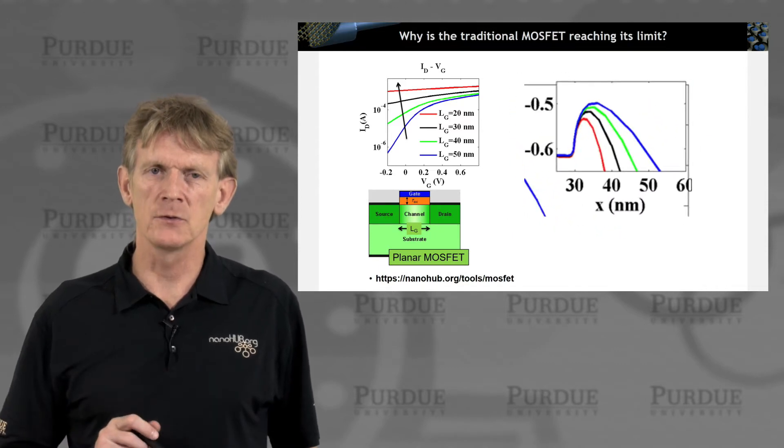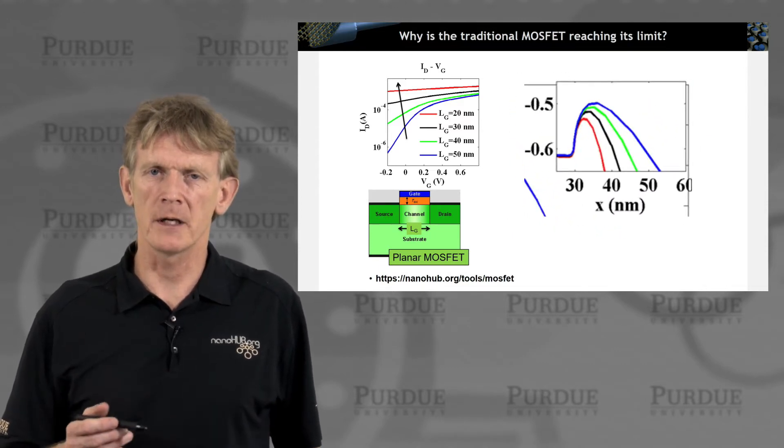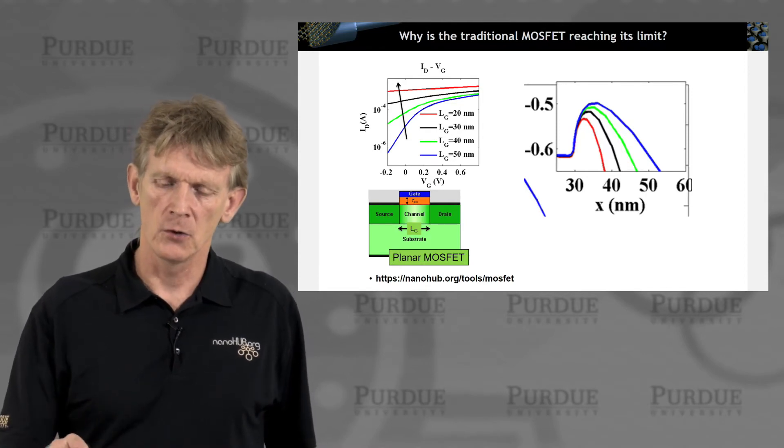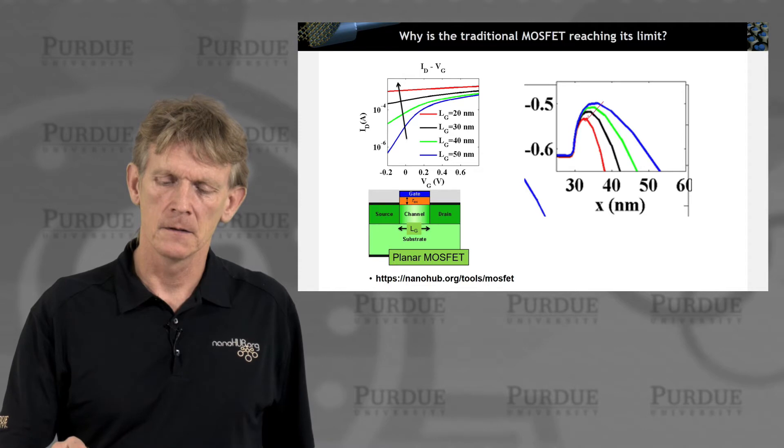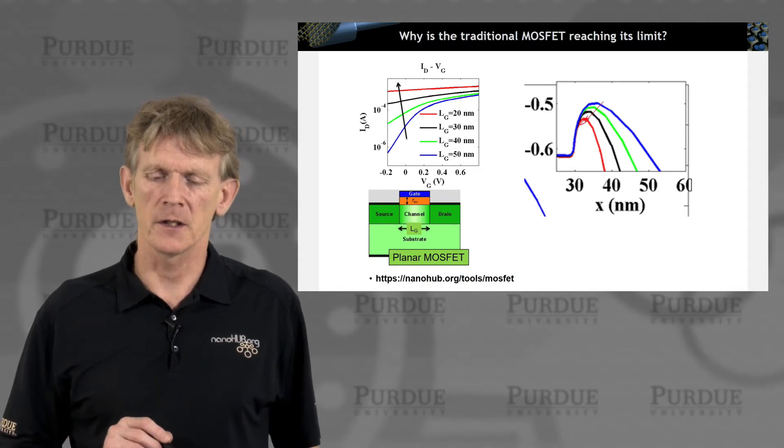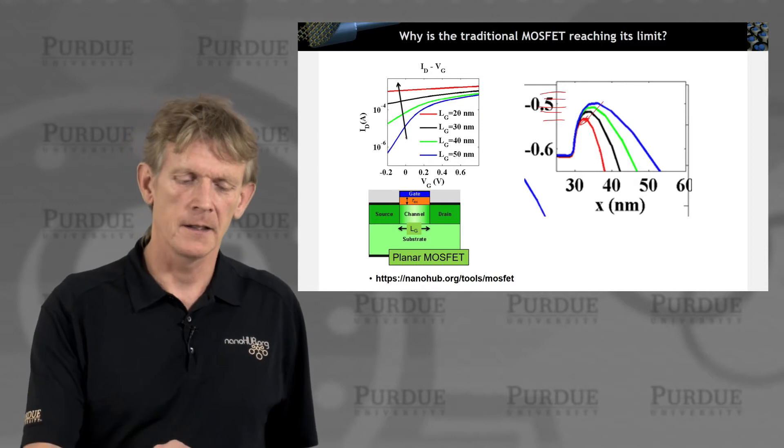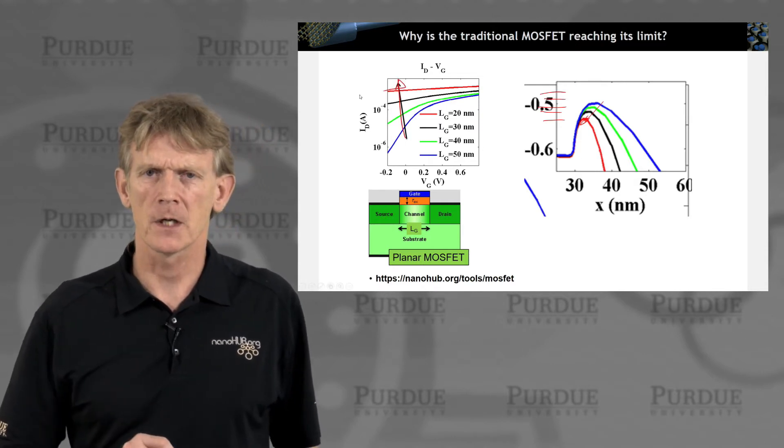That has to do with drain-induced barrier lowering. By pulling the potential so hard from the drain, you lower the barrier here, and therefore expose more carriers in your thermal tail, and that is why this current goes up.